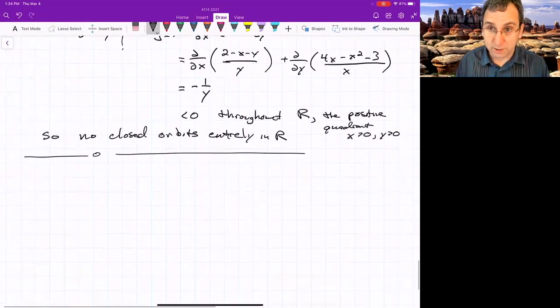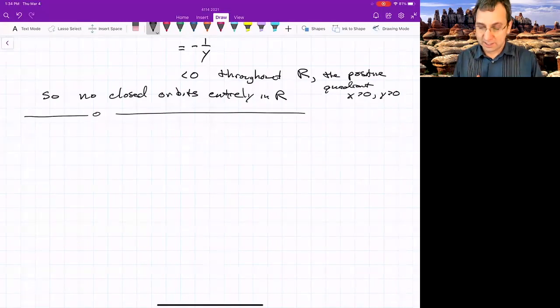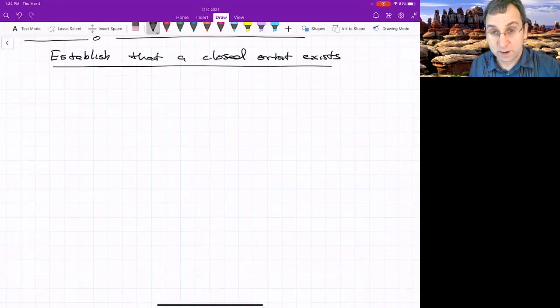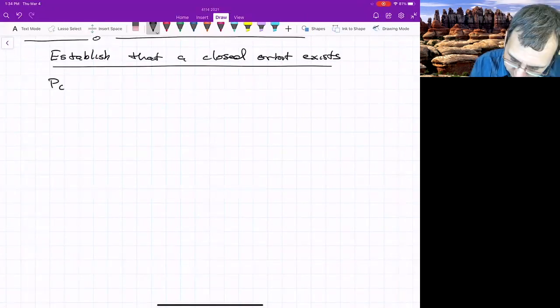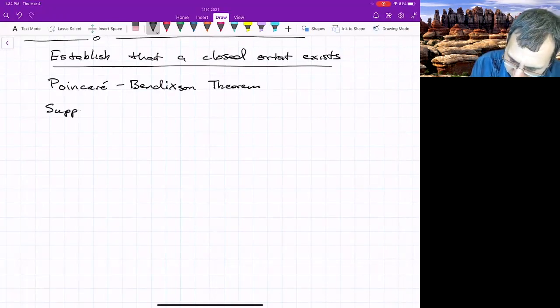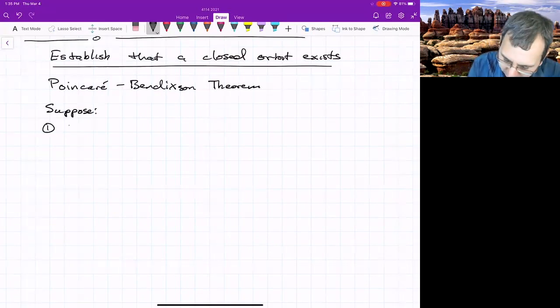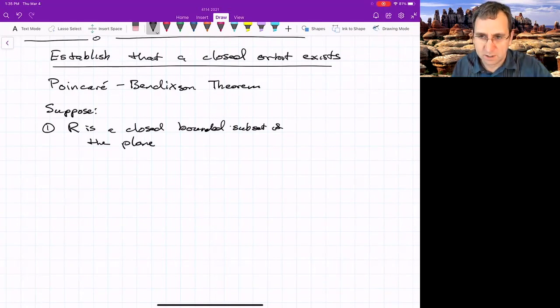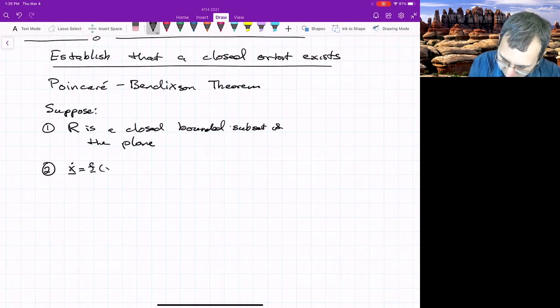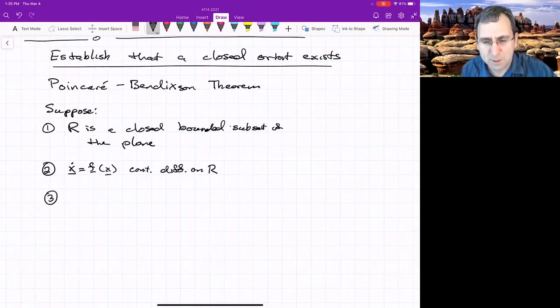There's another powerful thing that instead of ruling out closed orbits allows us to establish that closed orbits exist. The main one, it's called the Poincaré-Bendixson theorem. You're probably noticing we're encountering Poincaré's name quite a bit and we'll continue to. Let me give you some supposes. Suppose that first that we'll have a region R that's a closed bounded subset of the plane. There's no restriction here on being simply connected. So number two, same thing that we've been assuming about our vector field, it's continuously differentiable in this region. Another thing we need, this might be the hard one, is that R does not contain any fixed points.